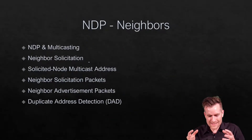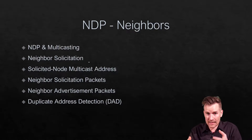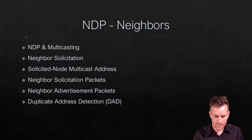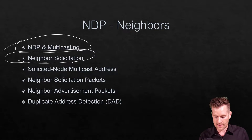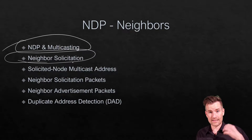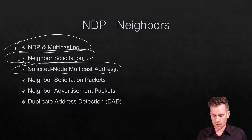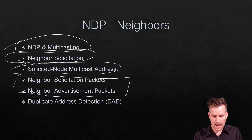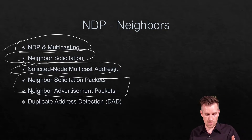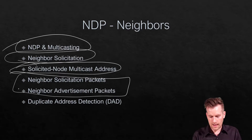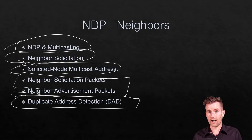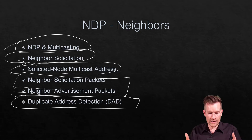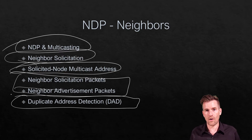We really are digging into the weeds now of how this stuff works. We started talking about NDP and multicasting, got into neighbor solicitation, and dug in even deeper — talking about how a device figures out its own solicited node multicast address. Based on that, we can do neighbor solicitations to figure out what MAC address is associated with a certain IPv6 address, and also do duplicate address detection to check for duplicate addresses on the network. This is why link-local addresses and this process are so critical — it's a core part of how IPv6 operates.